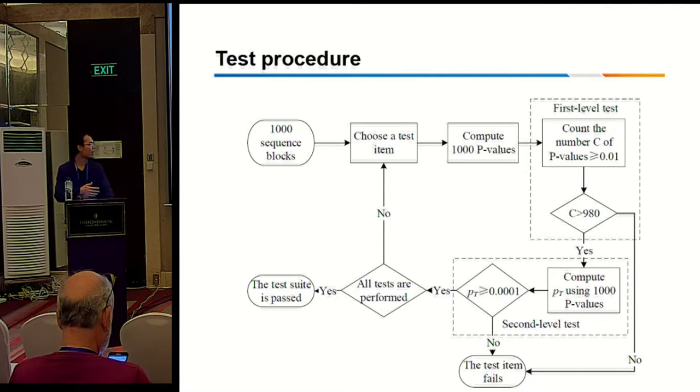And then I will give introduction to the whole test procedure. First, the whole sequence is divided into same sequence blocks. Here I take 1000 blocks as an example, and then we do the test item and compute 1000 P-values, and do the first level test and second level test. The first level test tests the passage rate of the 1000 blocks.